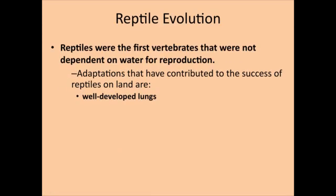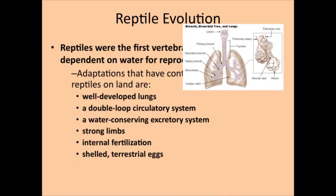Reptiles were the first to live out of water, so they don't need water for reproduction either. They have well-developed lungs so that they can breathe air on land. They have a double-loop circulatory system — remember how this is more efficient because it goes back to the heart before it pumps to the body. They also have a water-conserving excretory system, which is really important. They don't rely on water, so they want very concentrated urine to avoid wasting water. And they have strong limbs to help them on land.